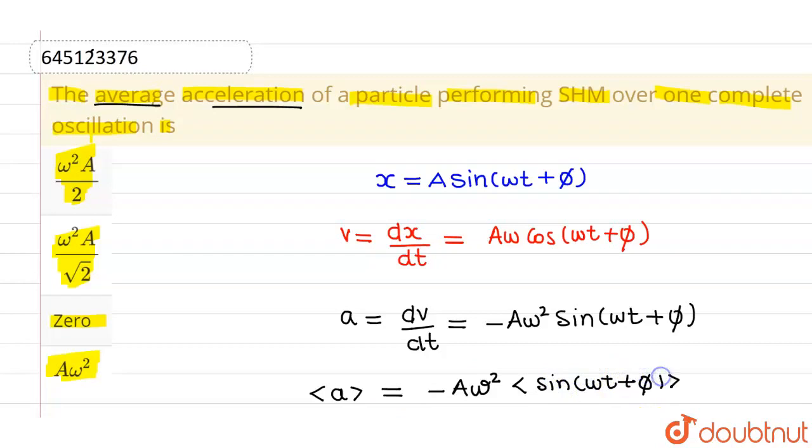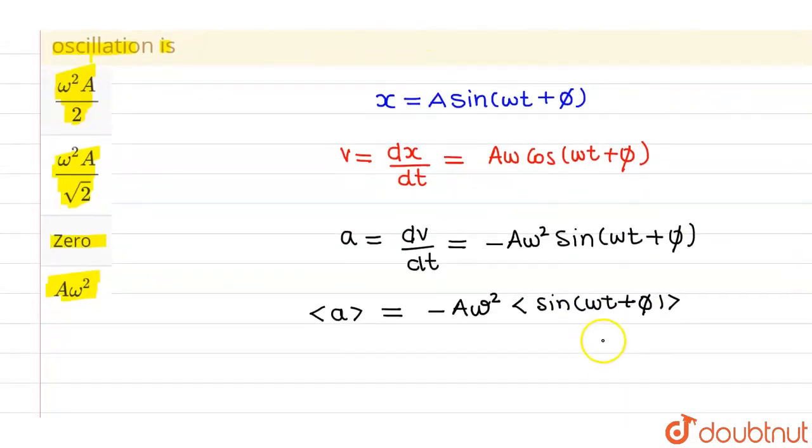Now we know that for one period, the average value of sin is zero. The average value of sin omega t plus phi for one cycle equals zero. So average value of acceleration will be minus A omega square into zero, which is ultimately giving us zero.